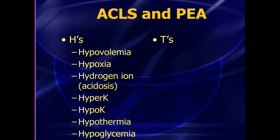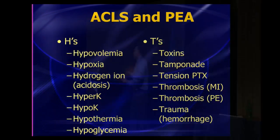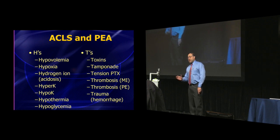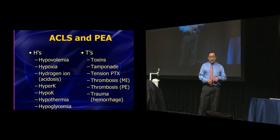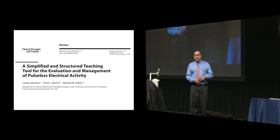There is a simpler method, and this is the article I want to focus on. Published by Laszlo Littman — a cardiologist — Devin Bustin — a second-year EM resident at the time — and Michael Haley, an intensive care physician, from Carolina's Medical Center. What these three did was look at the world's literature at all the T's and H's and ask: do all those T's and H's actually cause PEA? And is there a simpler, more rational approach to not only determining the cause but, more importantly, treating these patients? They came up with a very simple approach.